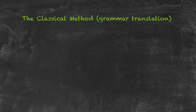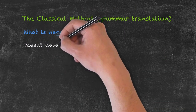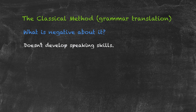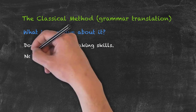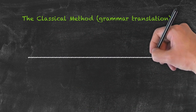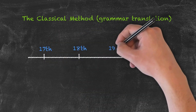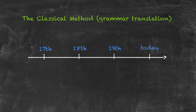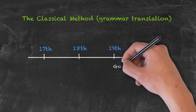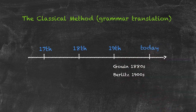In terms of negatives, we've already said it doesn't develop speaking. But perhaps the biggest negative about this methodology is that it's very unnatural. Despite these criticisms, this methodology was in use all the way through the 17th, 18th, and 19th centuries, and is still in use today. However, Gouin in the 1880s and Berlitz in the early 1900s decided it was so unnatural that they wanted to come up with something new.